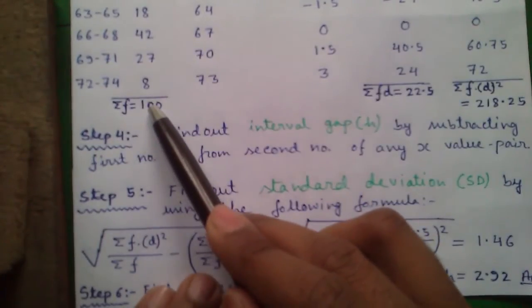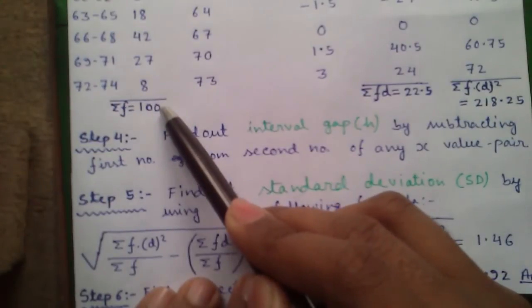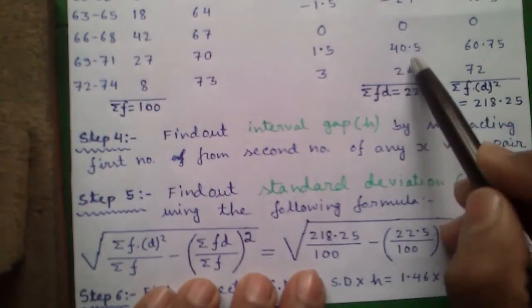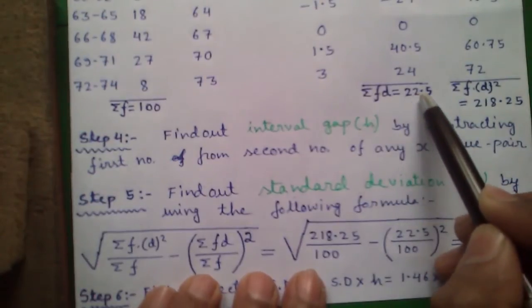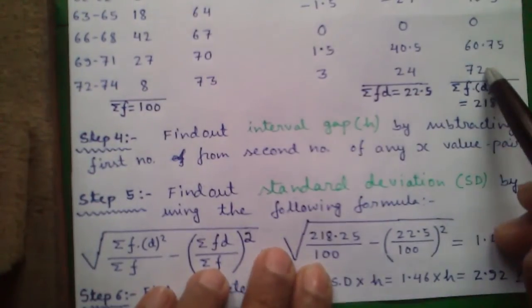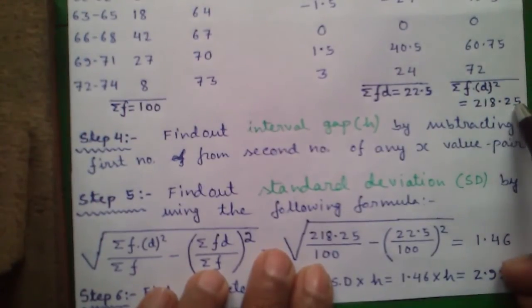Next find out the sum of f which is summation of all f values which is 100. Take summation of all fd values which is 22.5. Take summation of all fd whole square values which is 218.25.